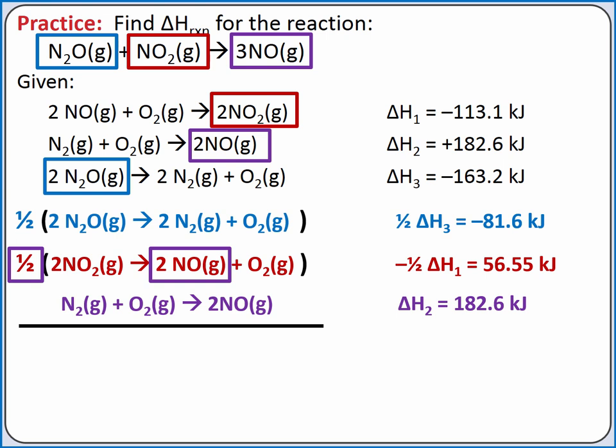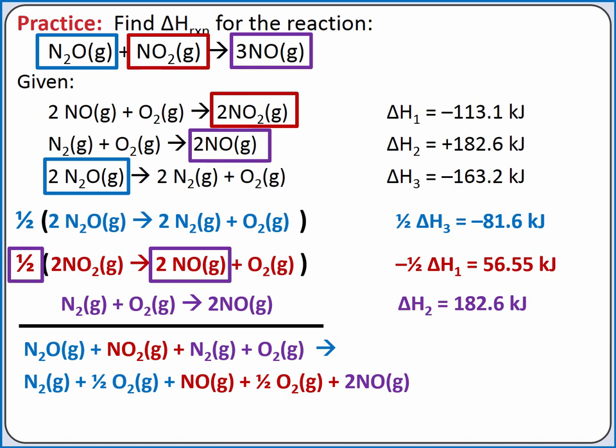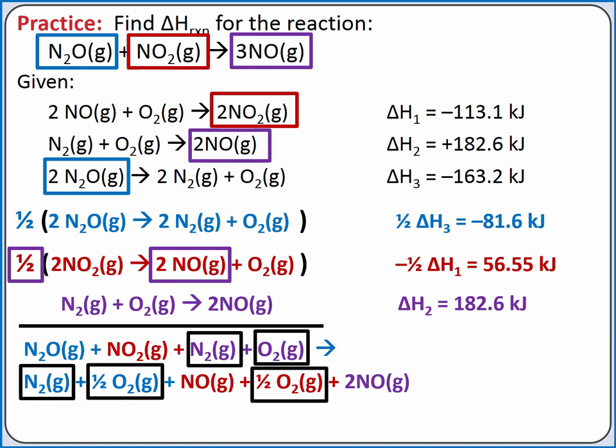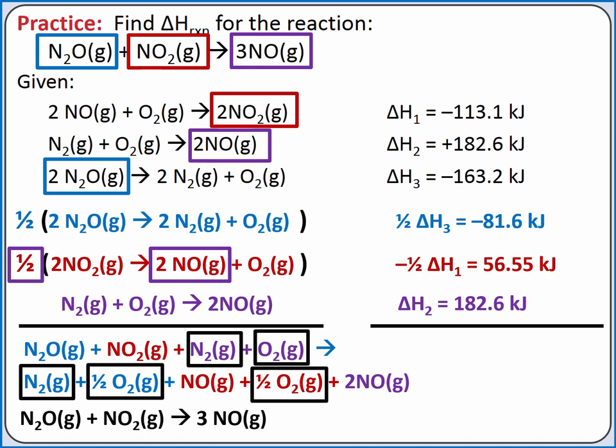Now we add all of these equations together. When adding reactions, all of the reactants stay reactants and all of the products stay products. Anything that shows up the same on both sides can be cancelled out — one mole of N₂ gas and one mole of O₂ gas appear on both sides, so we cancel these out. We're left with the overall reaction N₂O + NO₂ → 3NO. According to Hess's Law, the enthalpy of the overall reaction is the sum of the enthalpy changes for each step: −81.6 kJ + 56.55 kJ + 182.6 kJ = 157.6 kJ.